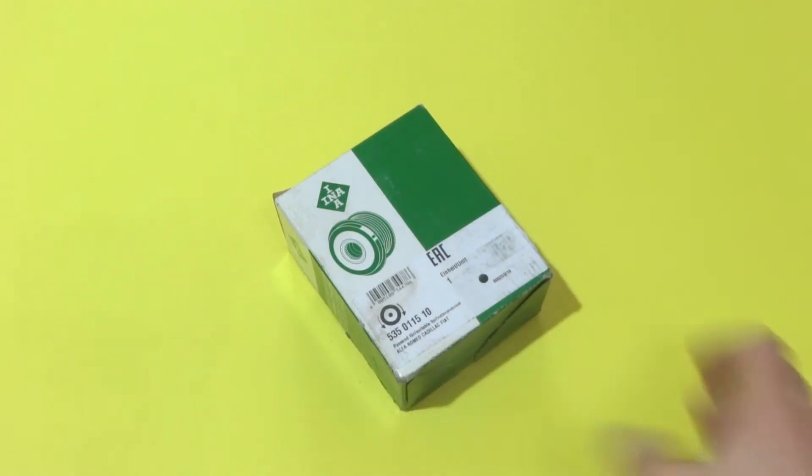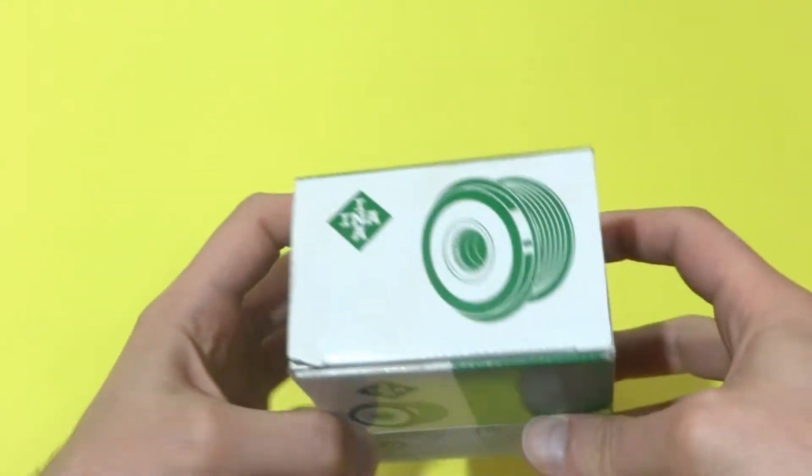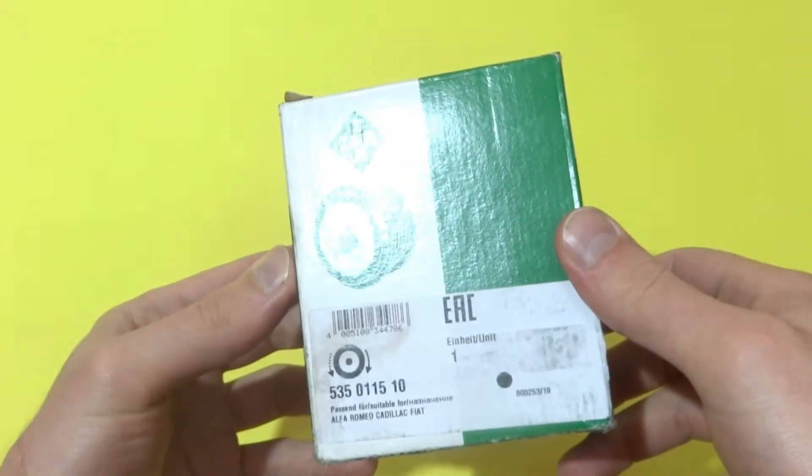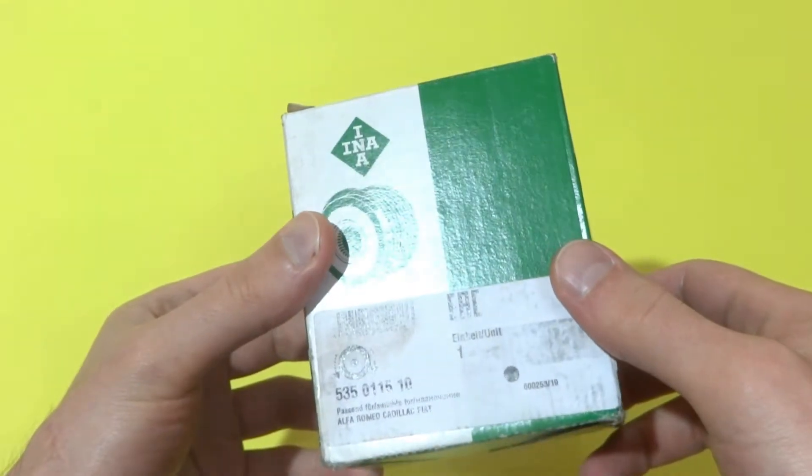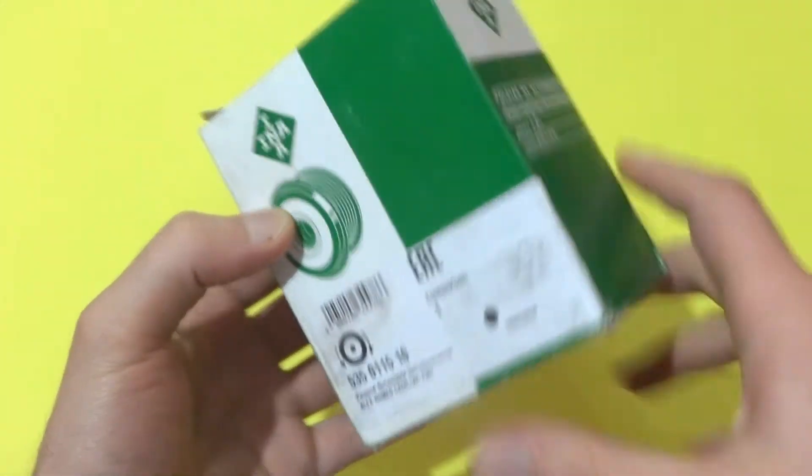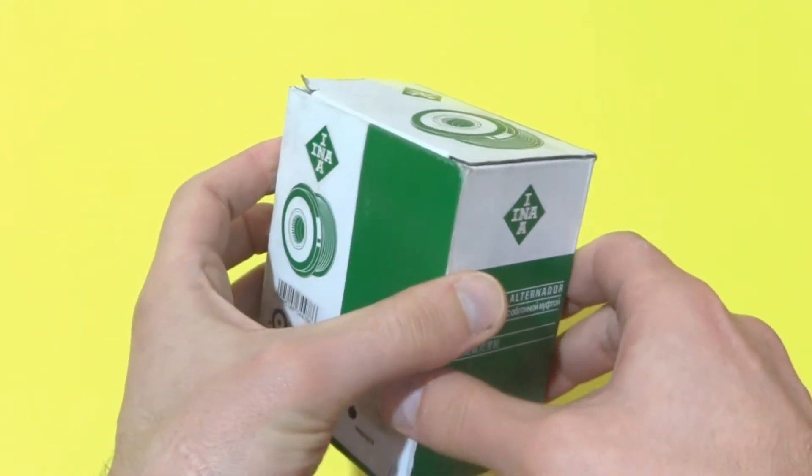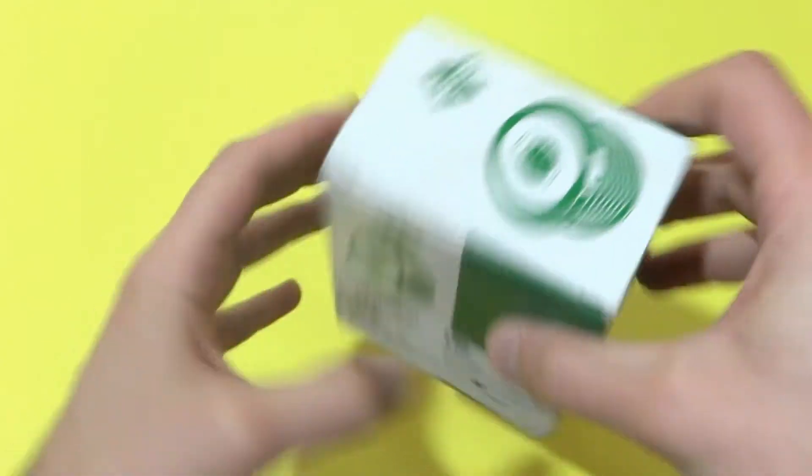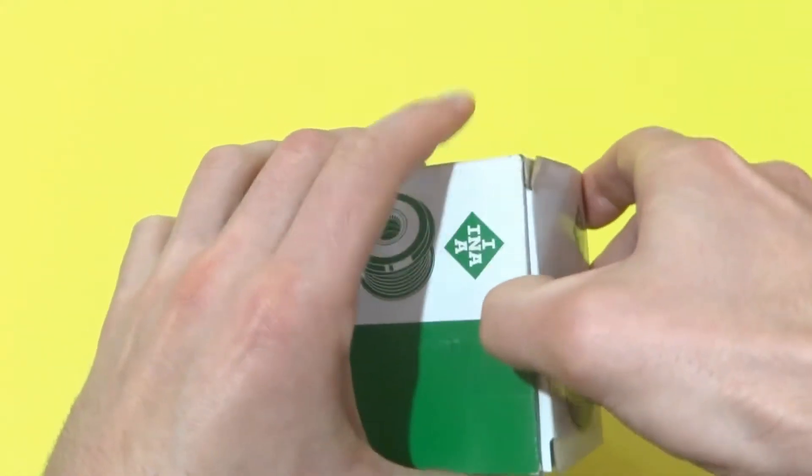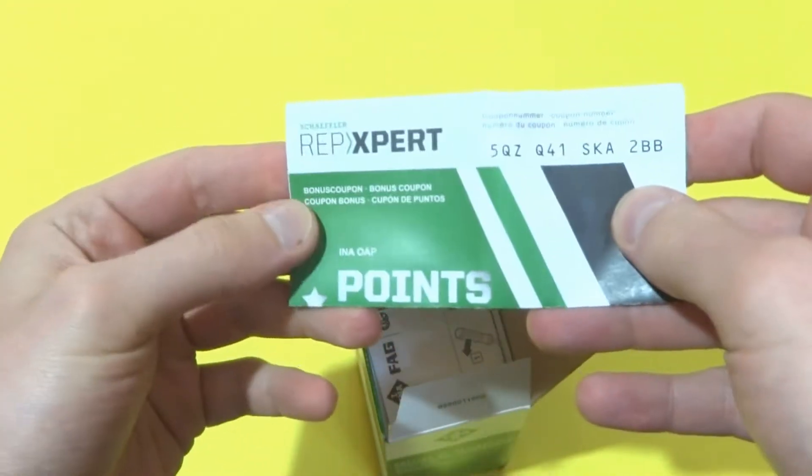Hello guys, continuing my previous video, in this one I'm going to show you more Vauxhall Astra parts. This one here is a freewheel pulley, or known also as alternator pulley or clutched pulley. So let's open it.